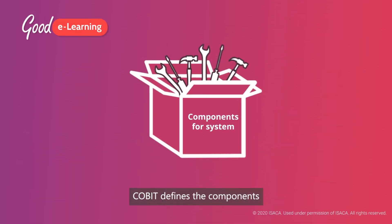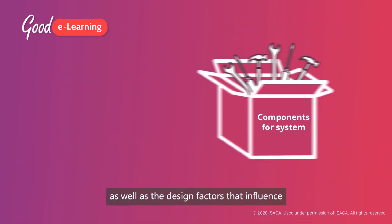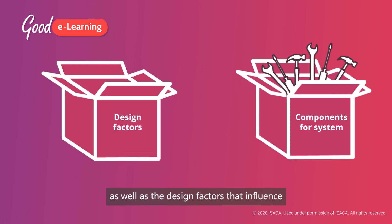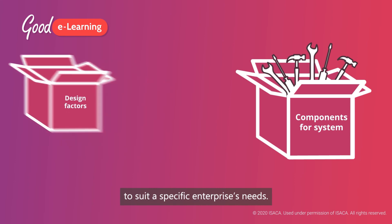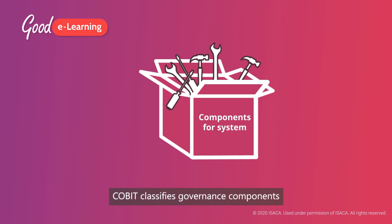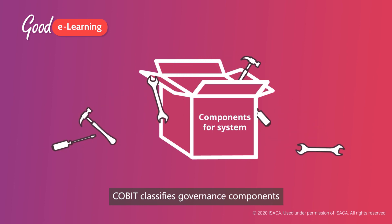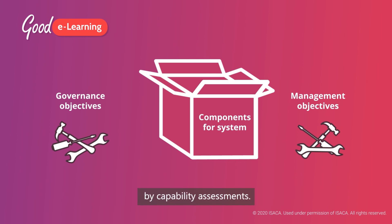COBIT defines the components to build and sustain a governance system, as well as the design factors that influence the shape of that system, so that it can be customized to suit a specific enterprise's needs. Finally, COBIT classifies governance components into governance and management objectives, and the performance of these can be managed by capability assessments.